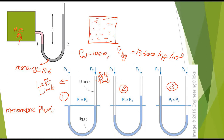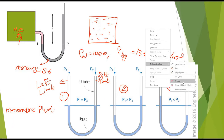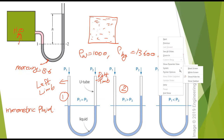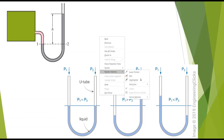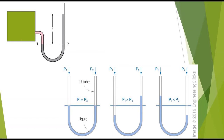If we have to measure the pressure of air, we can use water as the manometric fluid, since water has a much higher density than air. So the manometric fluid must always have a higher density than the fluid whose pressure is being measured.